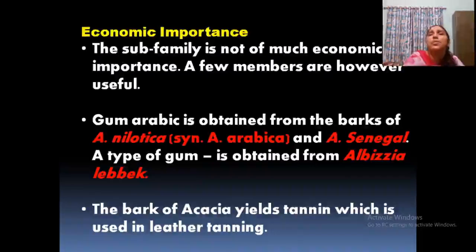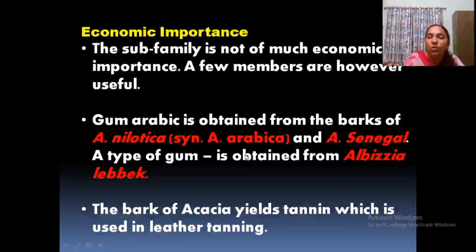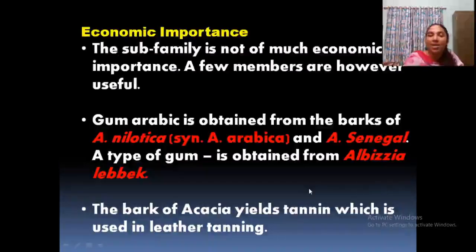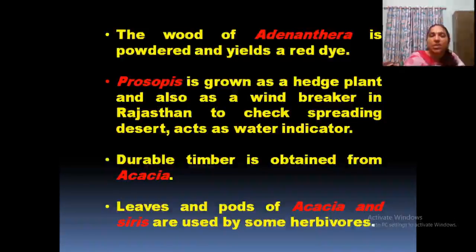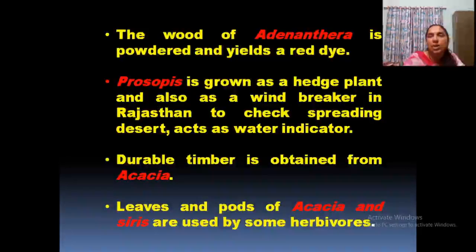Economic importance: only very few members are useful. Gum arabic — remember this term — is obtained from the bark of Acacia nilotica or Acacia arabica. Another type of gum is obtained from Albizia lebbeck. Acacia nilotica and Acacia senegal are used for gum arabic preparation. Bark of Acacia also yields tannin used in leather. Adenanthera wood provides a powdered red dye. Prosopis, a spiny plant, is used as a hedge plant and windbreaker. Durable timber is obtained from Acacia, used for preparing furniture.